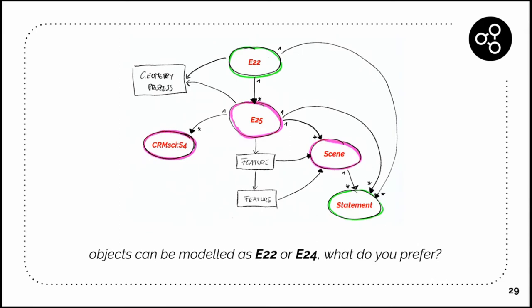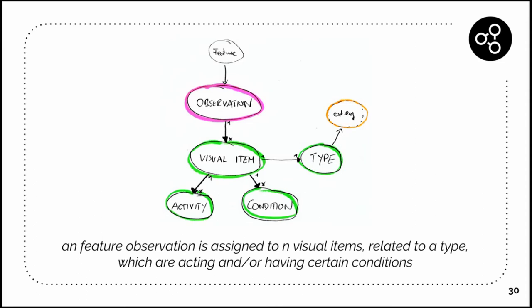If we map that to CIDOC-CRM and its extensions, we use the S4 class for the observation. At the moment we have the question if we have really a man-made object in the middle, an E22, or E24, but it's something we can discuss in the end.